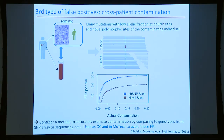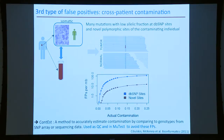A third type of false positive comes from DNA contamination — if a different individual's DNA gets into the tube, we'll see a few alternate reads in the tumor with nothing in the normal and incorrectly call it somatic. However, these contamination events typically occur at dbSNP sites. We developed a method called CONTEST that looks at all SNPs in the genome, identifies homozygous reference sites, and estimates the contamination level from those dbSNP sites. We then feed this contamination estimate back to MuTect so it accounts for potential contamination when calling mutations.